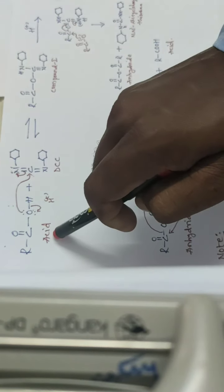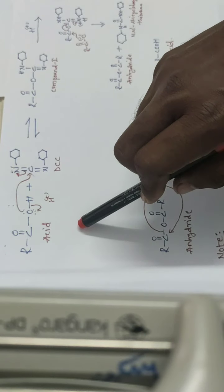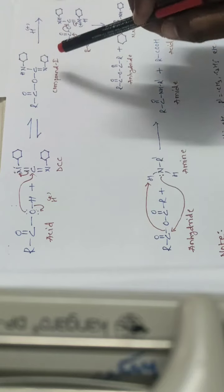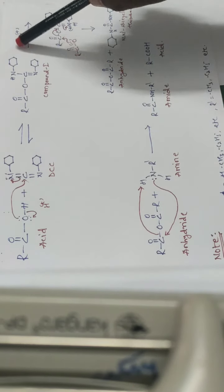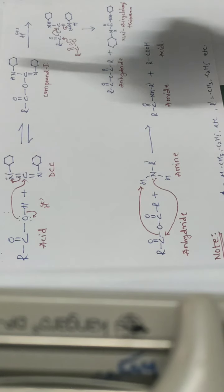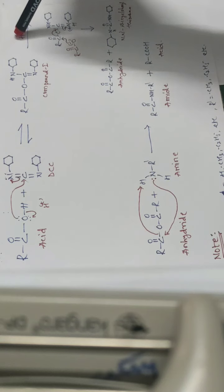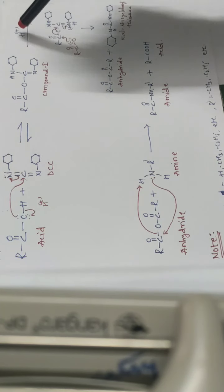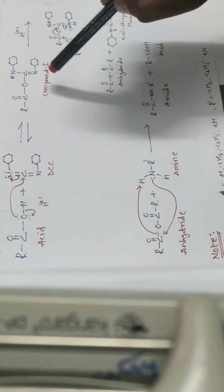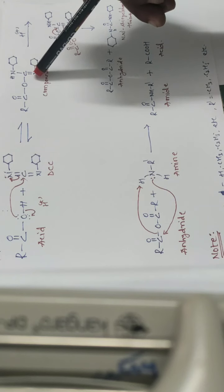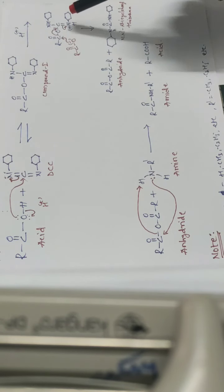The acid — which may be methanoic acid, ethanoic acid, propanoic acid, or whatever carboxylic acid — reacts with DCC to give compound 1, which is a complex molecule. Here I represent H+ meaning it is an acidic medium. This H+ comes from the second molecule of carboxylic acid. That H+ is an electrophile — an electron-deficient center — which always seeks the electron-rich center in compound 1. The electron-rich center is the nitrogen, and this hydrogen attacks the nitrogen, converting N into N+, as you can see in the structure.